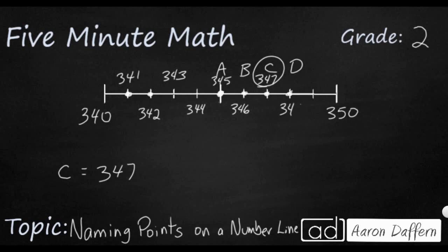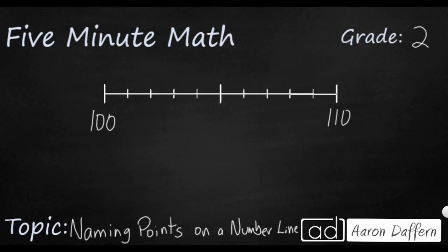If we wanted to go ahead and label point D, we can say 348, and then this is going to be 349 and we get up to 350. Let's look at another example. In our new example we have a number line ranged from 100 to 110, so once again they're 10 apart.